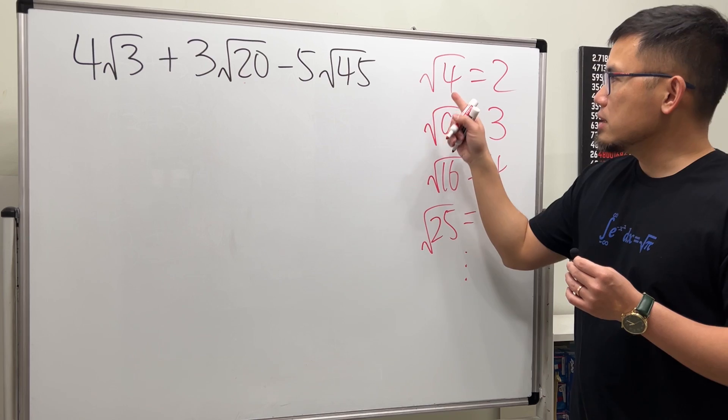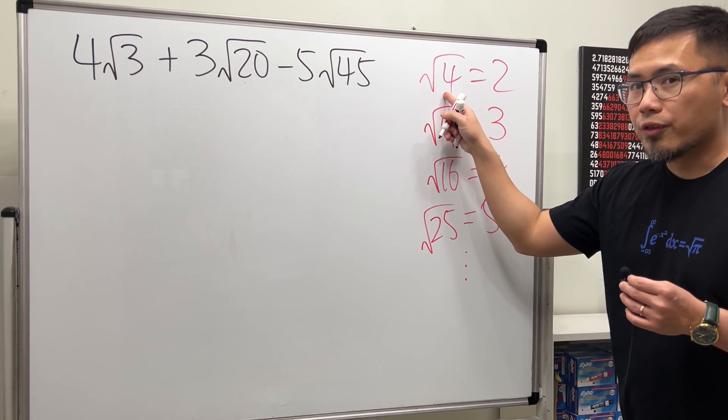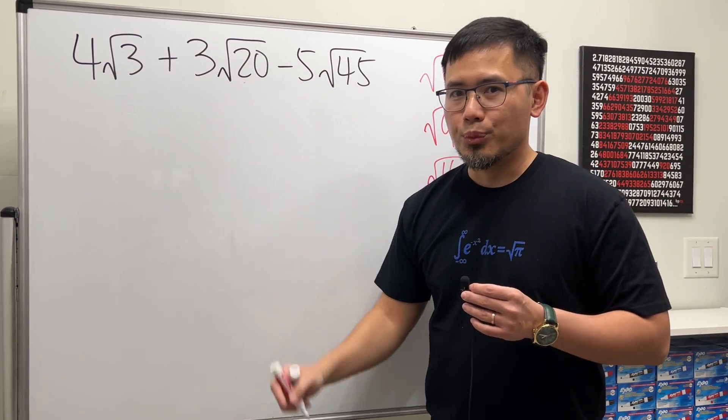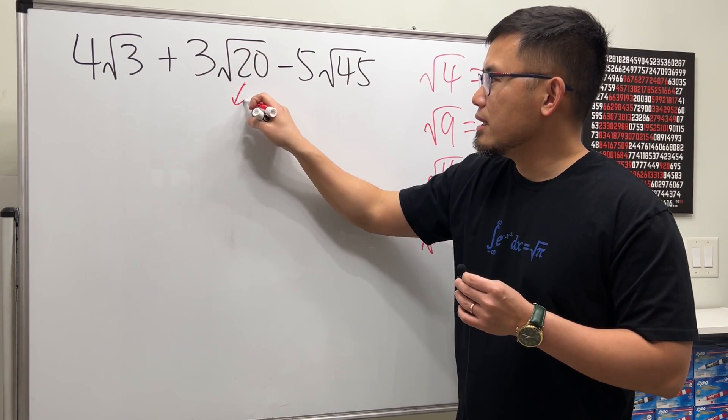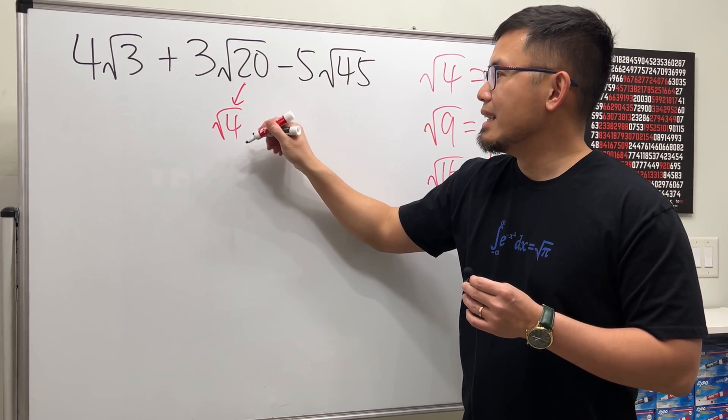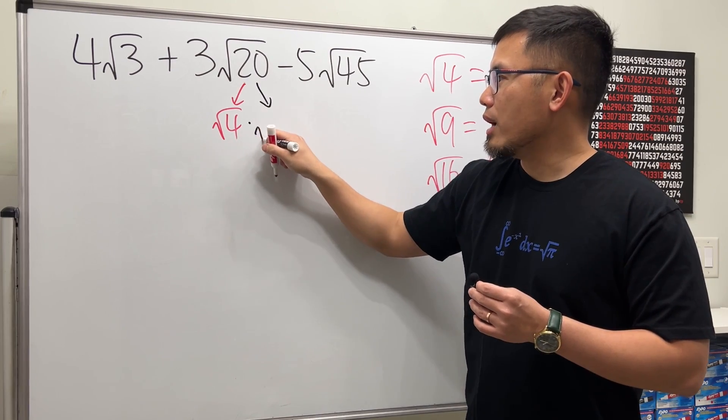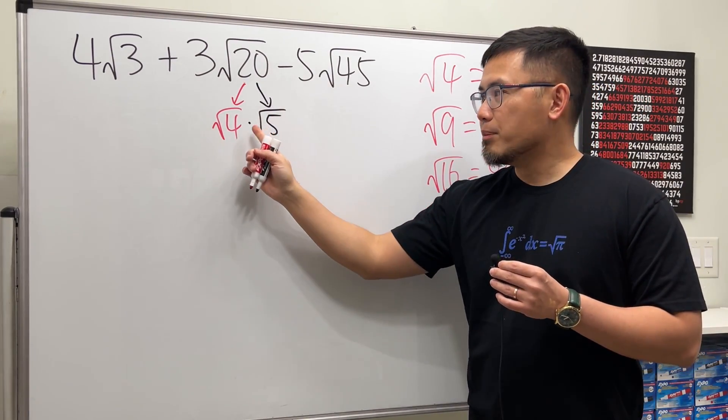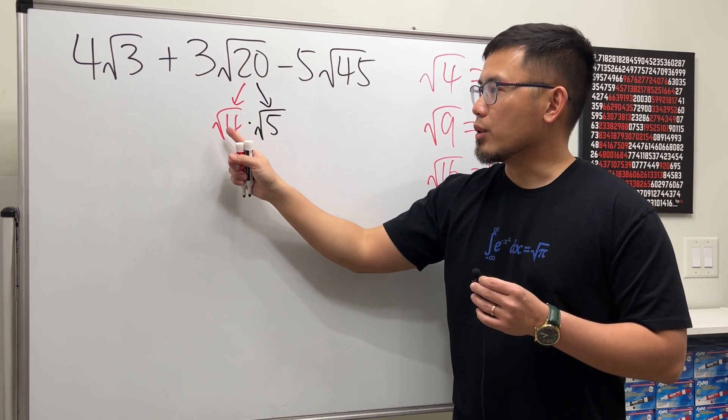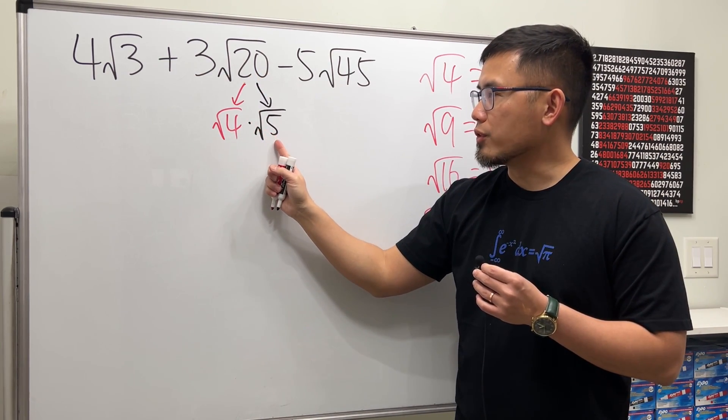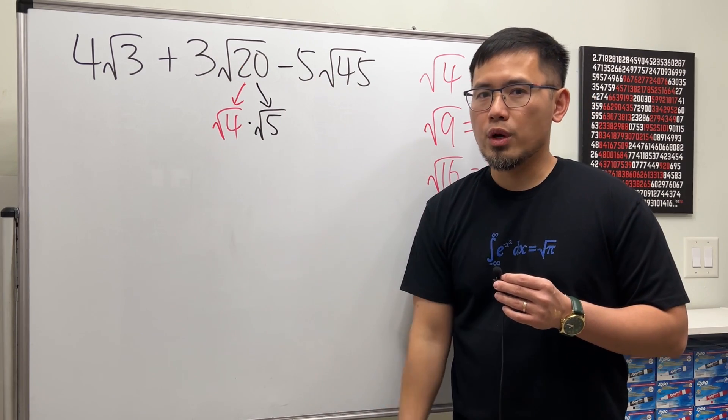As you can see, we can use √4 to break down √20 because we can break this down as √4 times √5. If it's a multiplication, it's okay. 4 times 5 is equal to 20. So √4 times √5 is equal to √20.